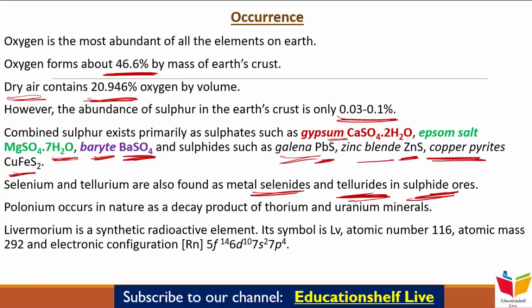जो हमारा last element आता है Livermorium, ये एक Synthetic Radioactive Element है, जैसा कि Group 15 में Moscovium था। इसका Symbol है LV, Atomic Number है 116, Atomic Mass है 292, और Electronic Configuration है [Rn] 5f14, 6d10, 7s2, 7p4। ये बहुत ही कम amount में produce किया जा सकता है, और इसकी short half-life होती है — एक second से भी कम — इसलिए इसकी properties अच्छी तरह study नहीं कर पाते हैं।